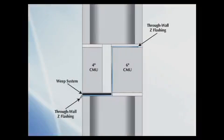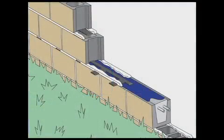Most CMU walls are flashed and weaved using two smaller blocks placed side by side and by using a through wall Z flashing. The MTI method improves on this design. The slope to drain tool used in conjunction with MTI's cavity weep creates a drainable, sustainable CMU wall system.